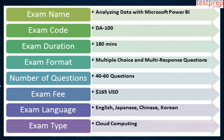Exam details. 1. Exam name is Analyzing Data with Microsoft Power BI. 2. Exam code is DA-100. 3. Exam duration is 180 minutes. 4. Exam format is multiple-choice and multi-response questions. 5. Number of questions are 40 to 60. 6. Exam fee is 165 US dollars. 7. Exam language is English, Japanese, Chinese, Korean.